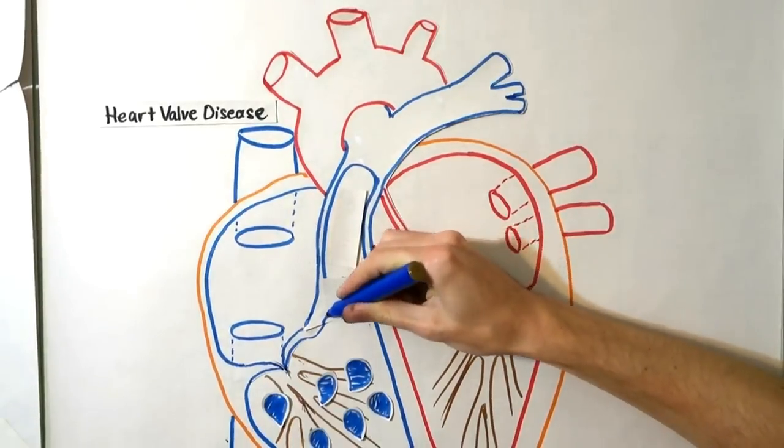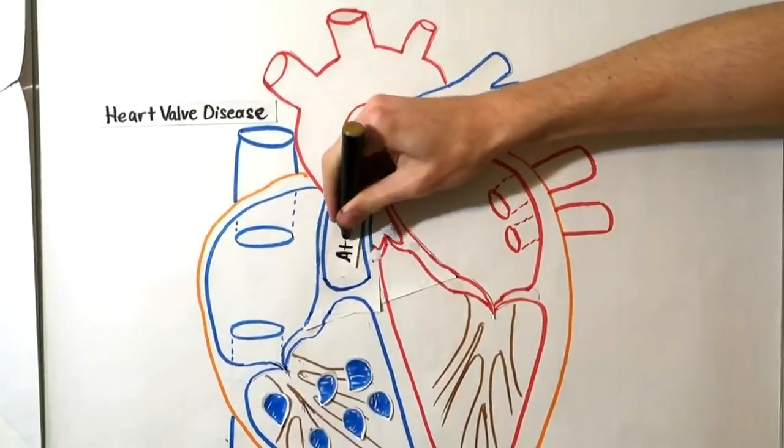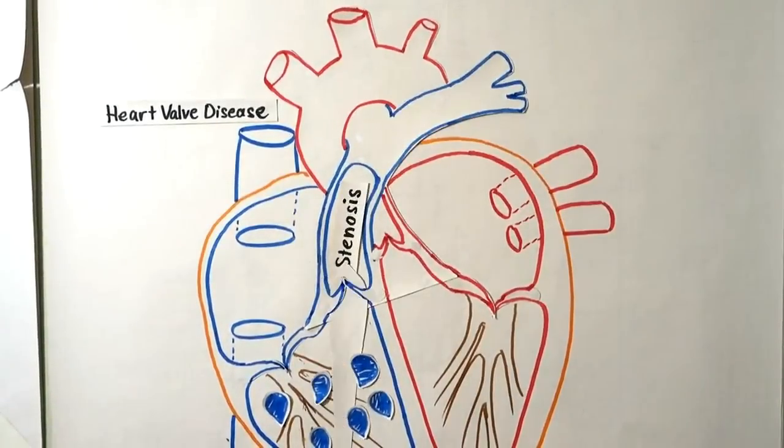Atresia occurs if a heart valve lacks any opening for blood to pass through. This is a congenital condition. In order to treat these conditions, valve repair or replacement is required.